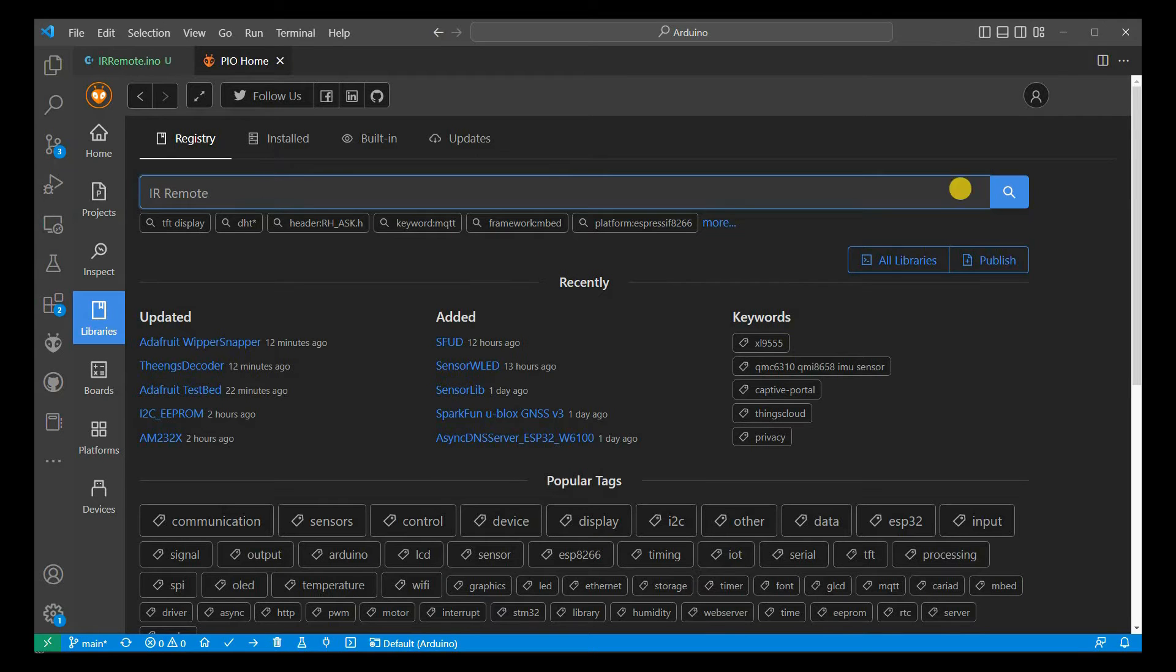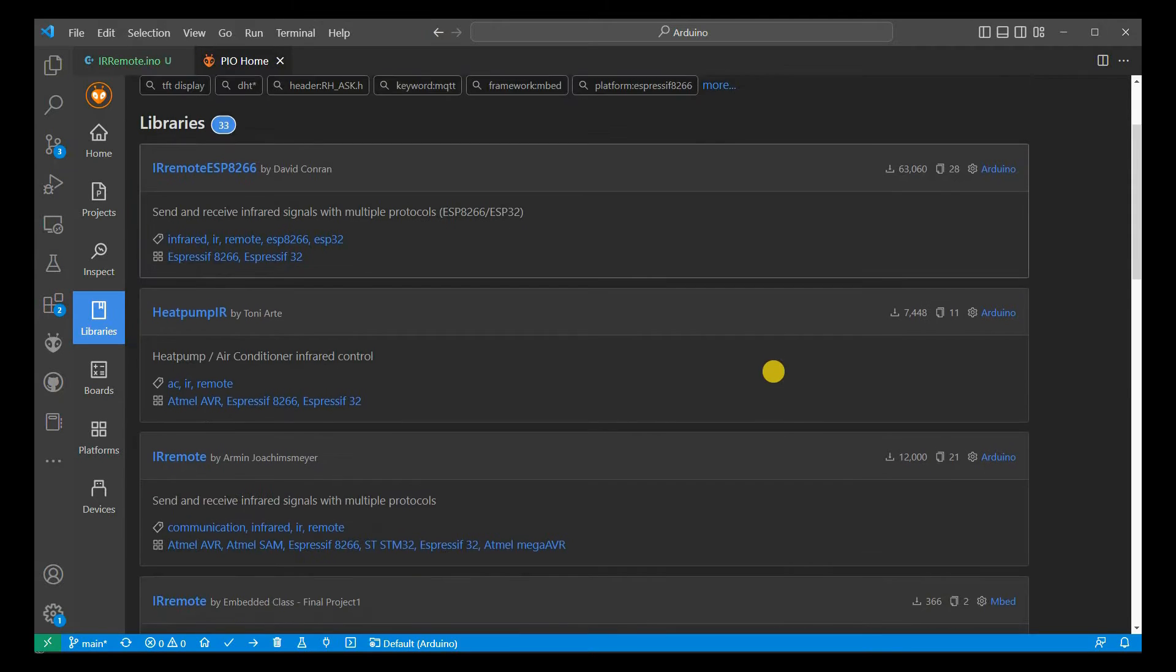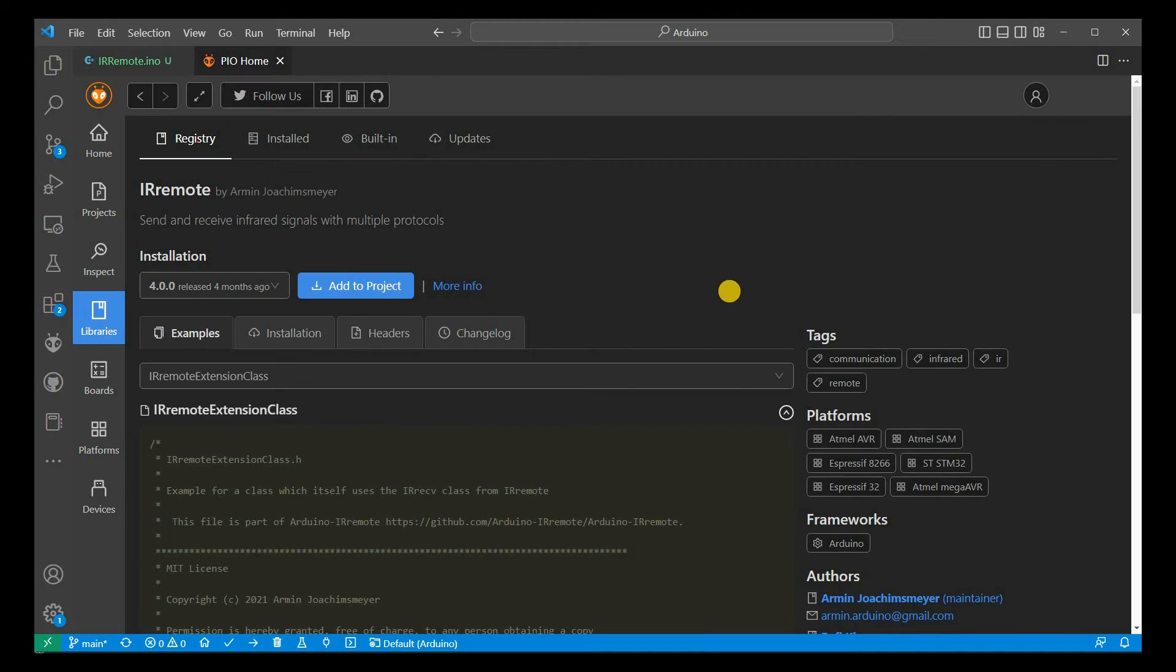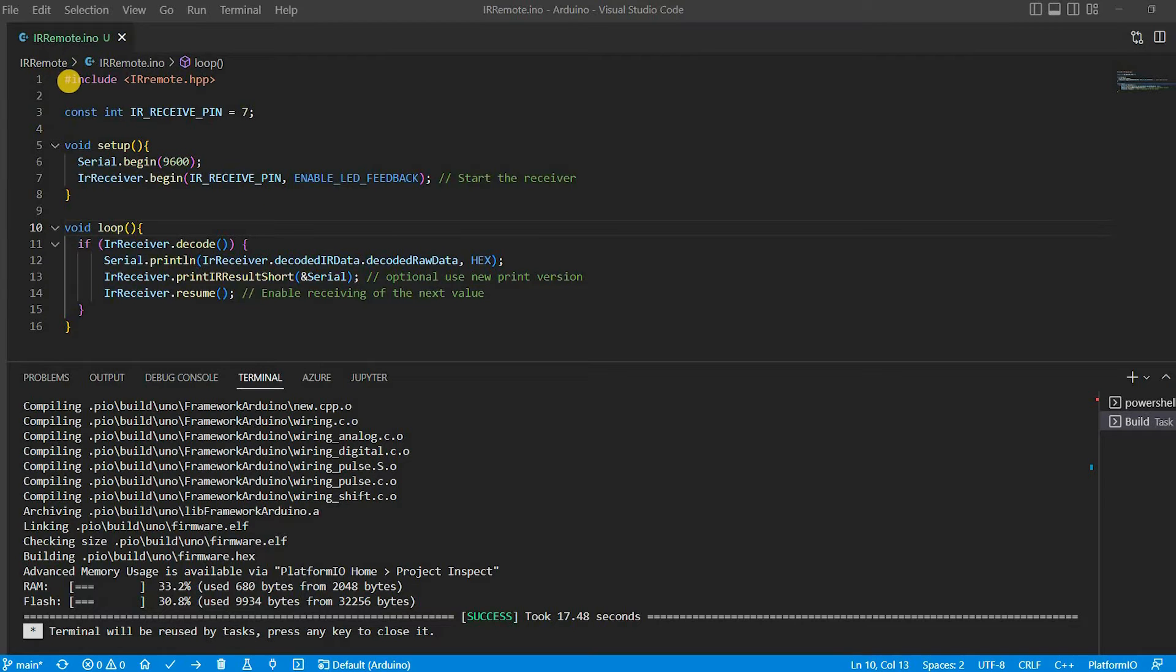For this sketch I am using the IR remote library which I added to the project. I set up pin 7 as the IR receive pin.